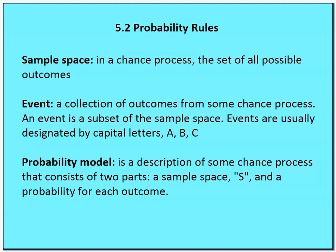Events are usually designated by capital letters A, B, C, etc. And then a probability model is a description of some chance process that consists of two parts: a sample space and then a probability for each outcome.